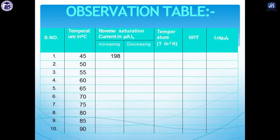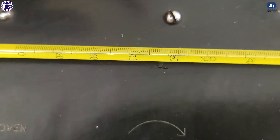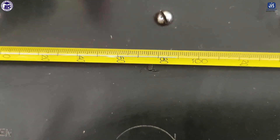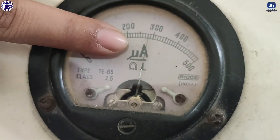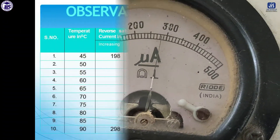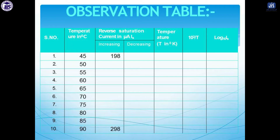Next, come to the column ln I₀. I₀ is basically an average value, but here we are not calculating the average — we will take the decreasing value. Now the temperature is at 90 degrees. At 90 degrees you can see the current is 298. This is the increasing part; you have to take readings from 45 to 90 degrees. Here I am taking only the minimum and maximum readings: at 45°C the increasing current is 198, and at 90°C the increasing current is 298.